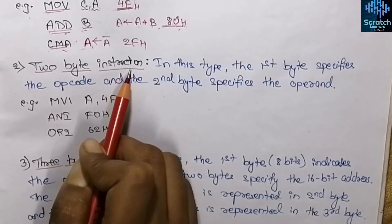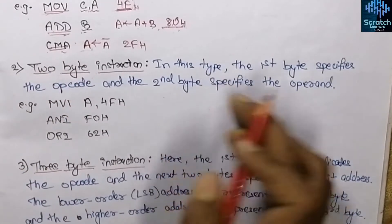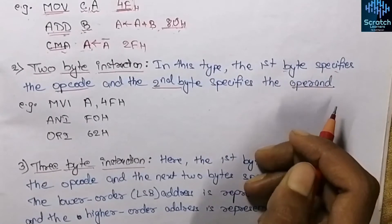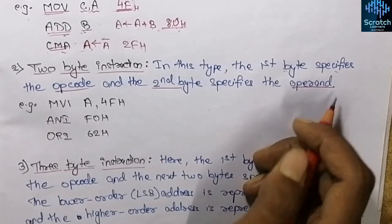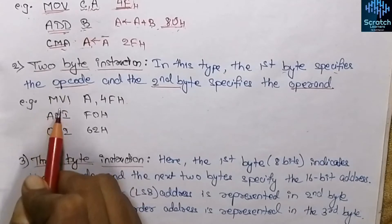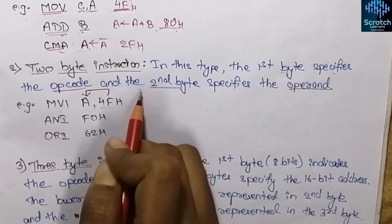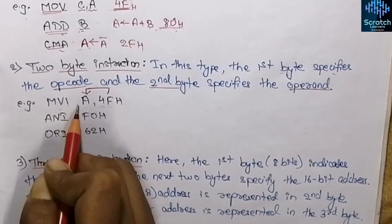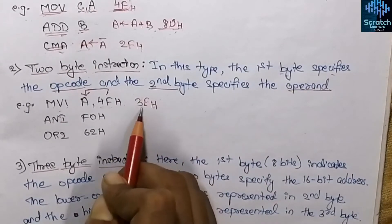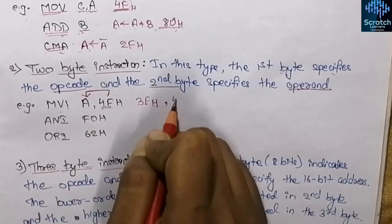The next is the two byte instruction. As the name suggests, these instructions take two bytes of memory. The first byte specifies the opcode and the second byte specifies the operand. Take the example of MVI instruction: MVI A,4F hex — Move Immediate — loads the data 4F hex into the accumulator. The first byte specifies the opcode: the hex code of MVI A is 3E hex, so the first byte is occupied by 3E hex.